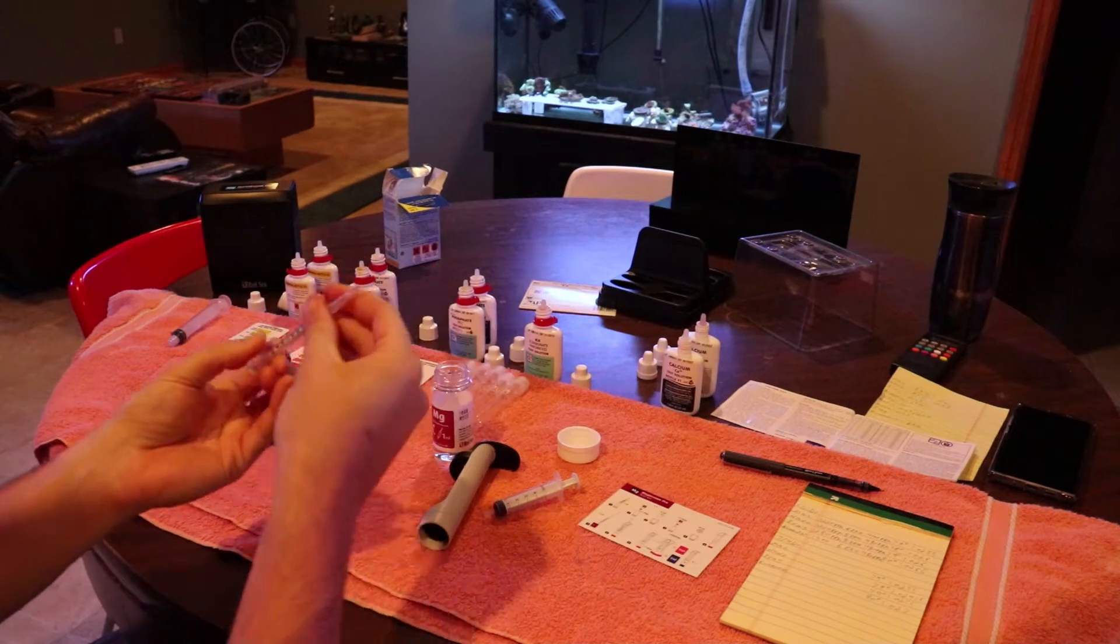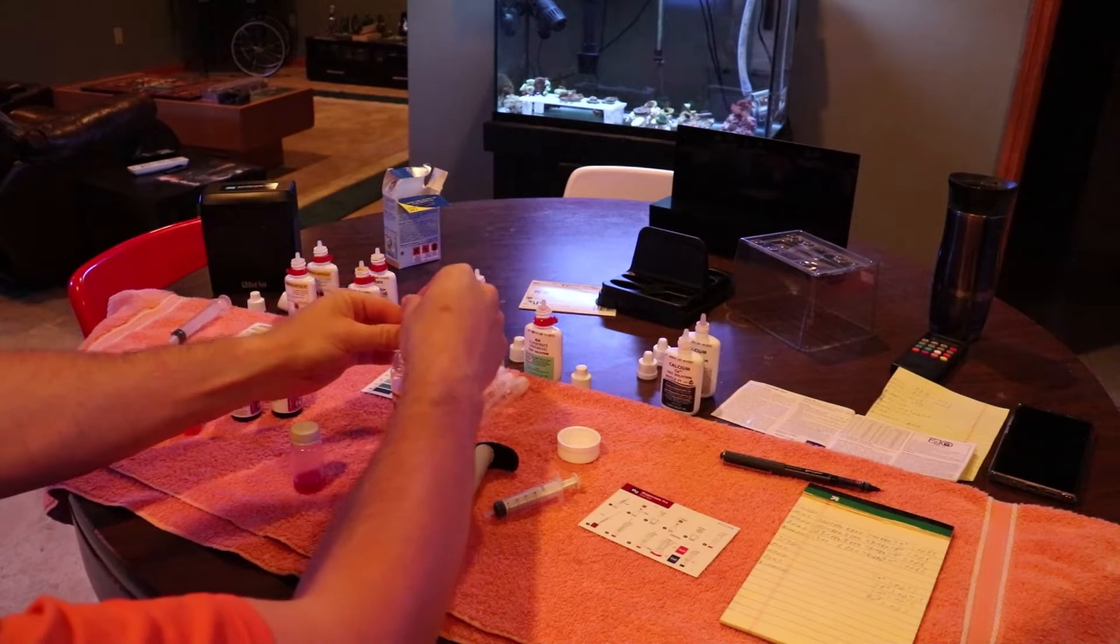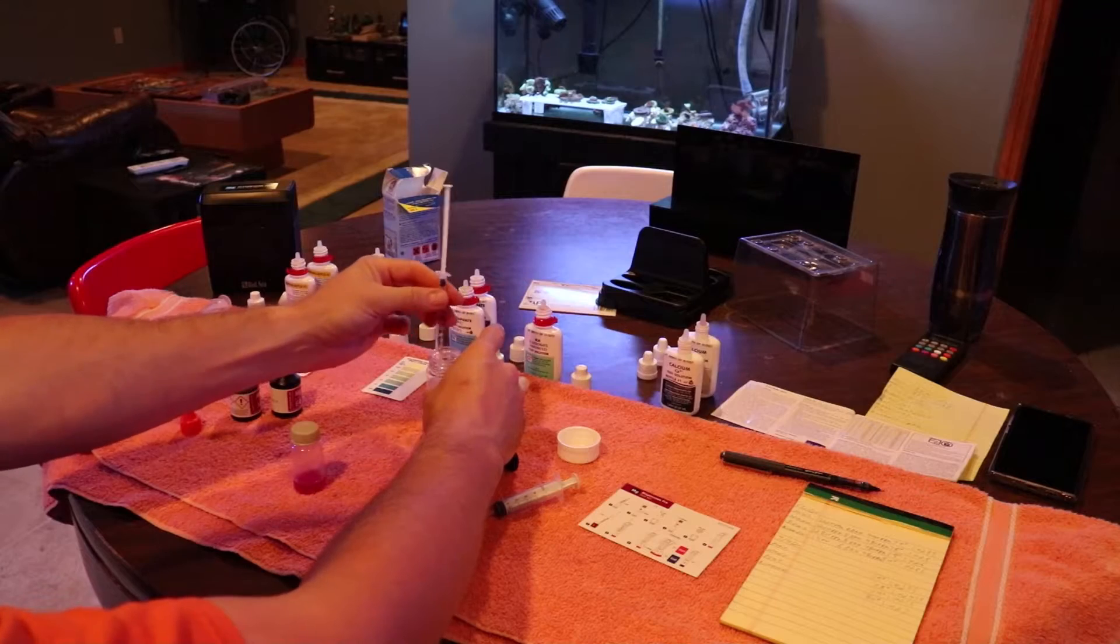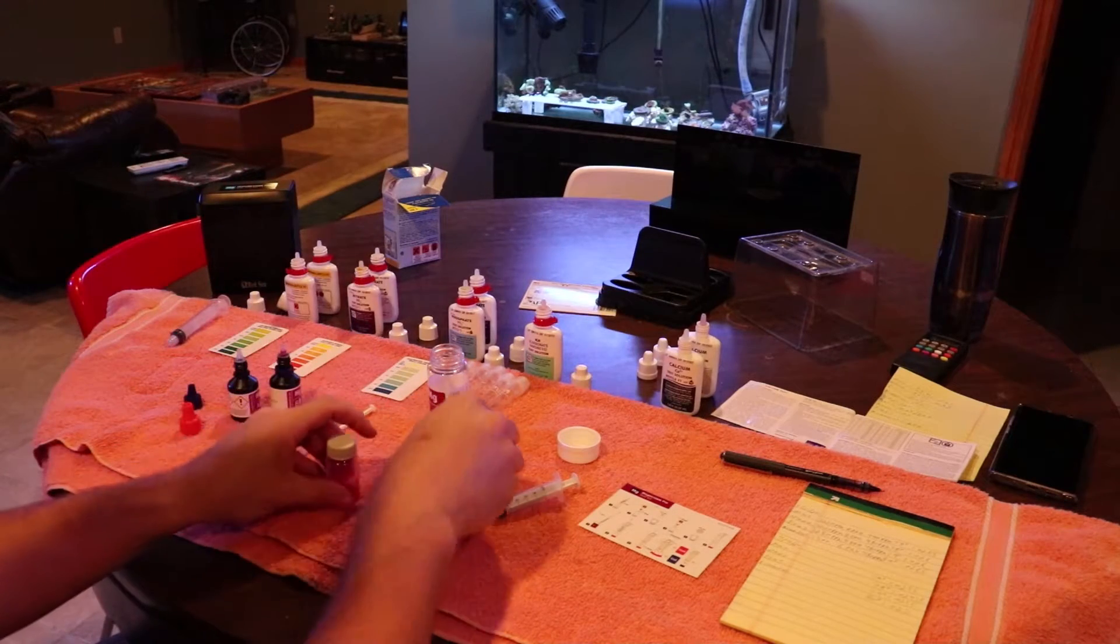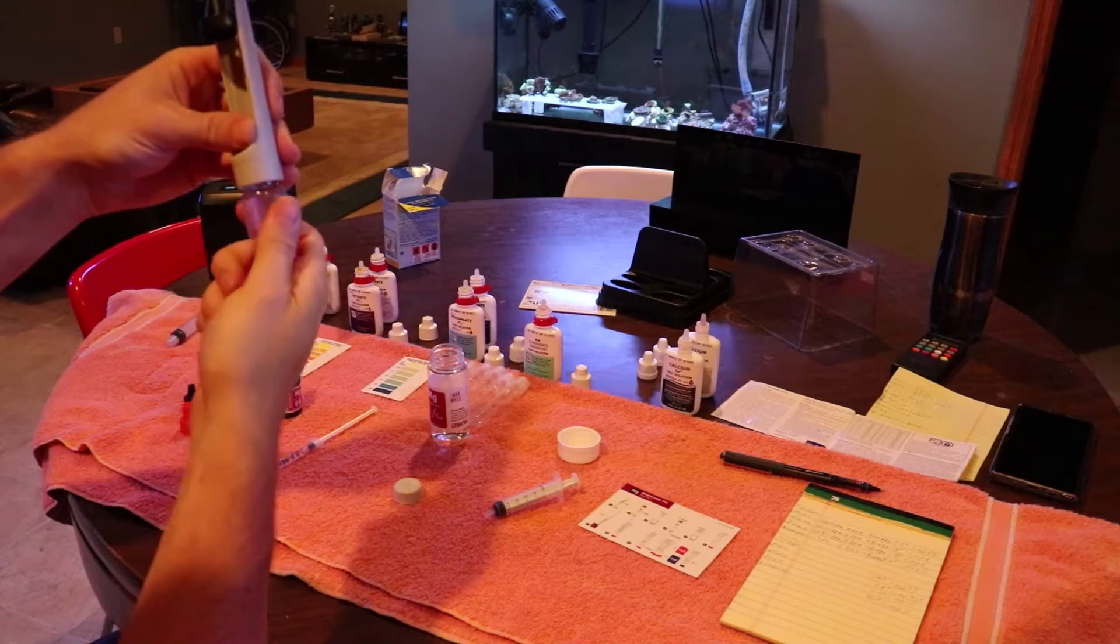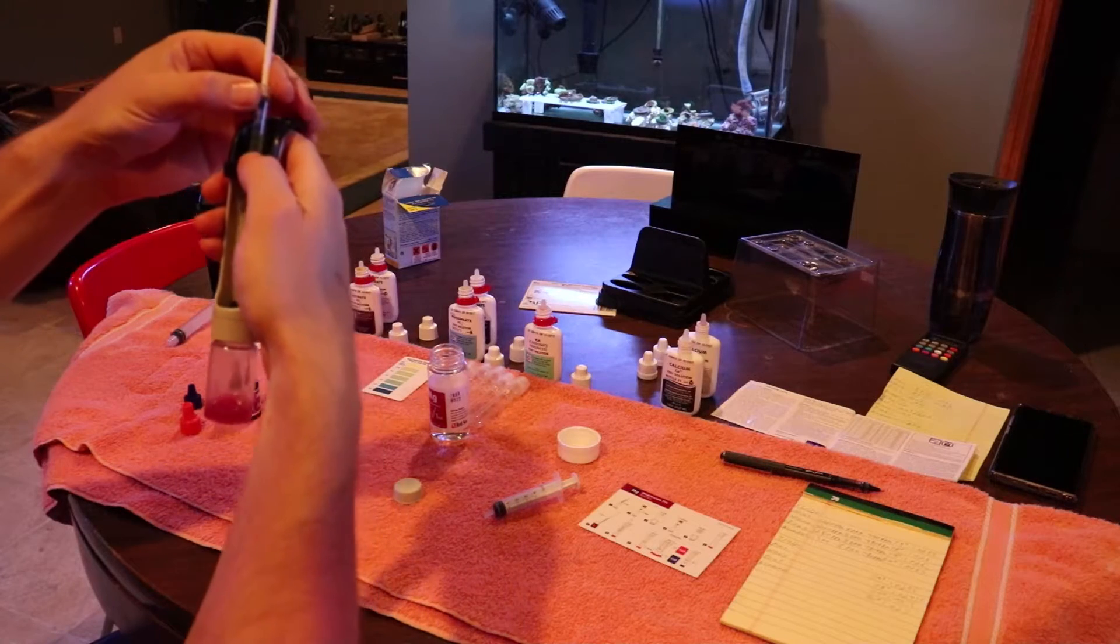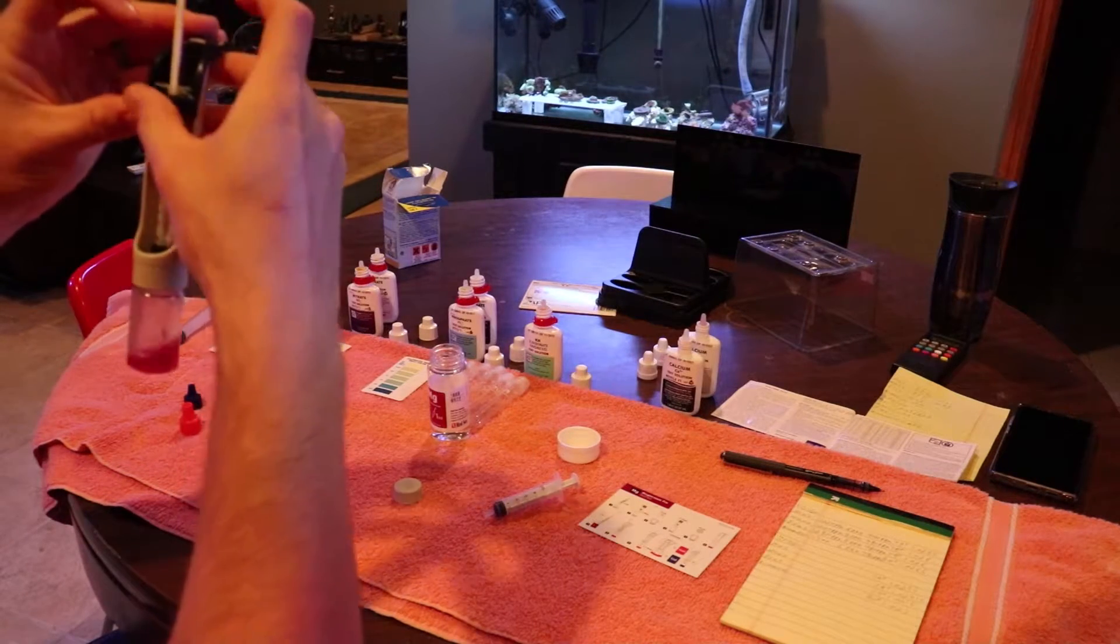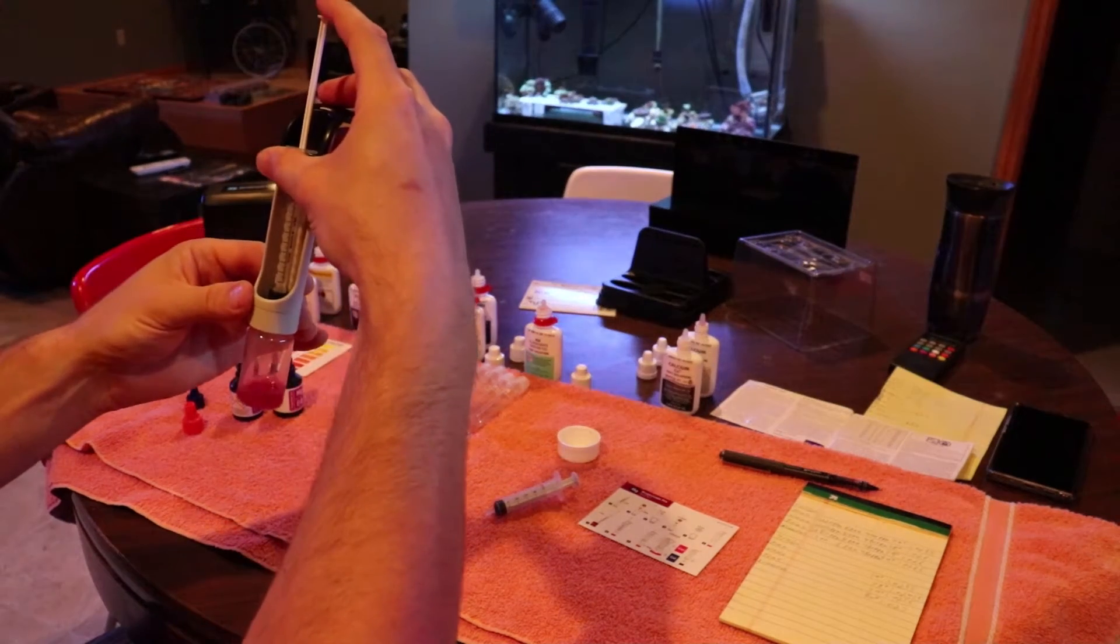I got a one milliliter syringe here. Reagent C is what we're going to actually do the titration drip test with, so you're going to draw up one milliliter of Reagent C into your syringe. This test kit comes with everything I'm using here, I didn't have to buy anything extra. Attach your little jar under your holder, slide the one milliliter syringe into the top of the holder.